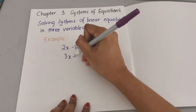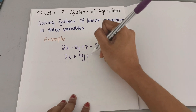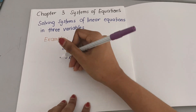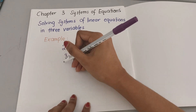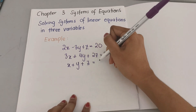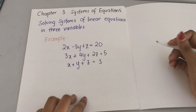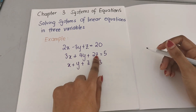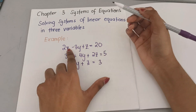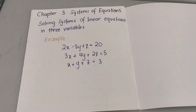We also have 3x plus 4y plus 2z equals 5, and a third equation x plus y plus z. As you can see, this is linear — linear means there is no power applied to the variables.